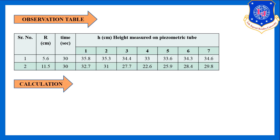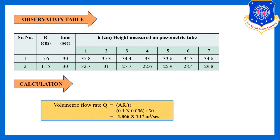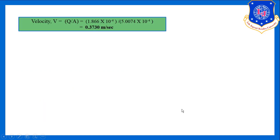To prove Bernoulli's equation, we need to calculate three types of head: pressure head, velocity head, and potential head. First, we calculate the volumetric flow rate Q = A × R / t, where A is the area of the measuring tank, R is the reading, and t is time. For reading one: Q = 0.1 × 0.056 / 30 = 1.866 × 10⁻⁴ m³/s.